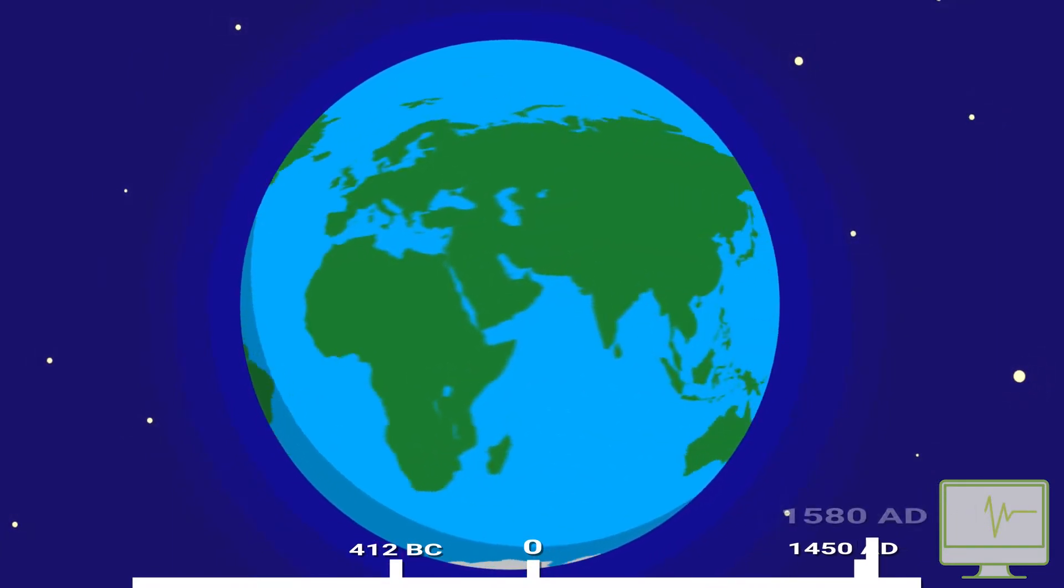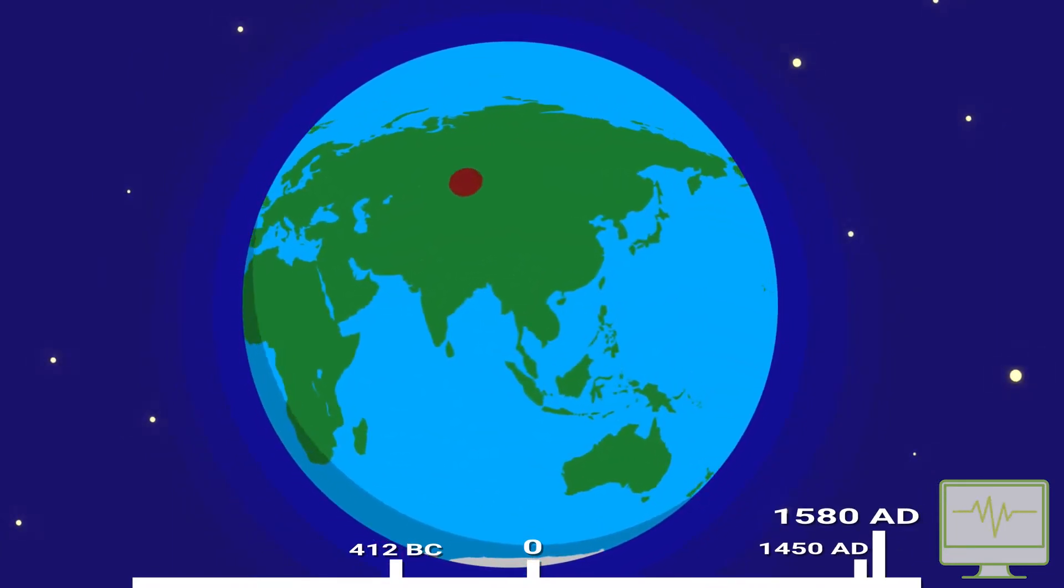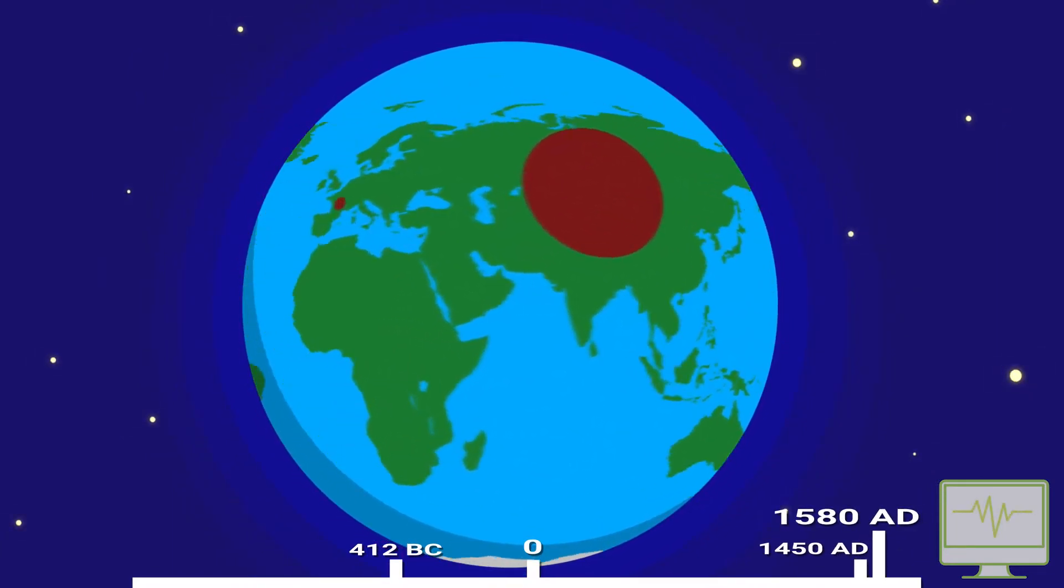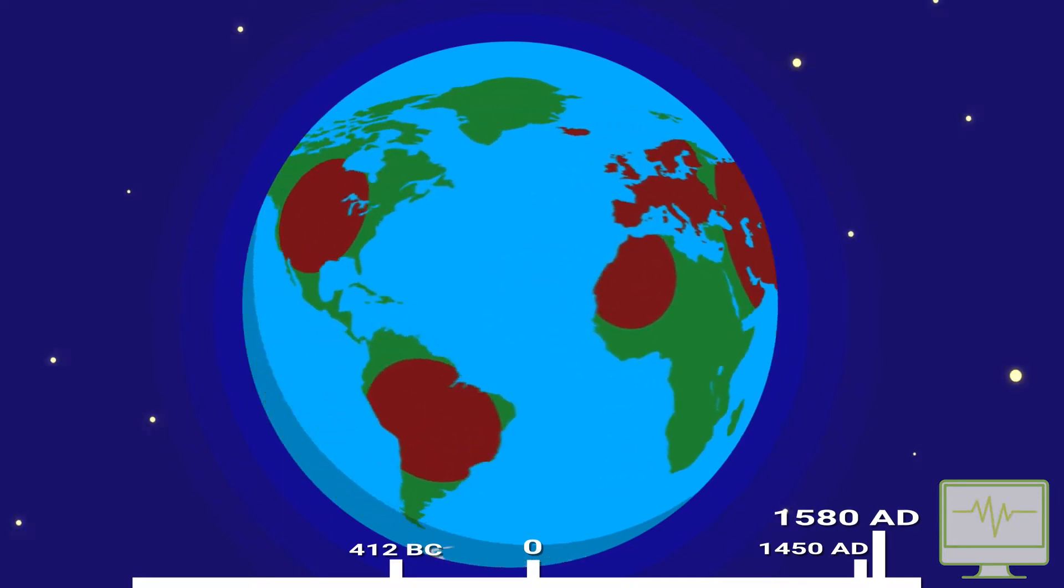It wasn't until the 1580s that the first documented pandemic occurred, originating in Asia and Russia. It subsequently spread to Europe, Northwest Africa and the Americas.